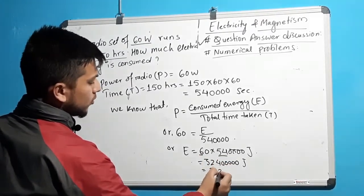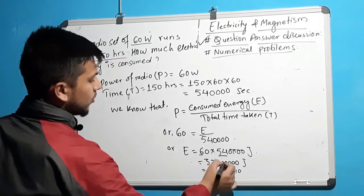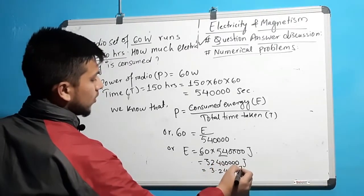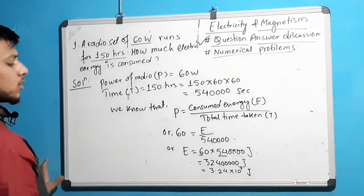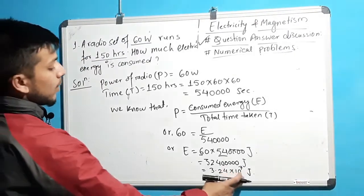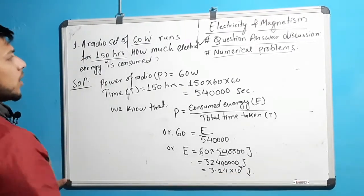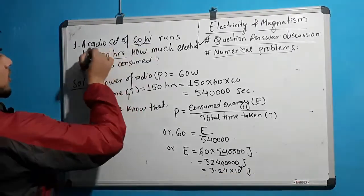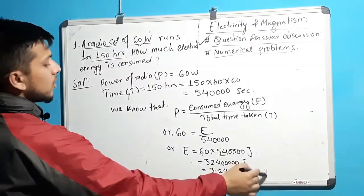That is equal to 3.24 into 10 to the power 7 Joules. This is the consumed energy. This amount of electrical energy is consumed by the 60W radio set. This is our answer to the first question.